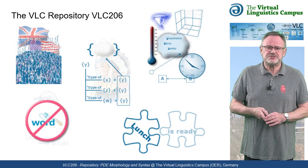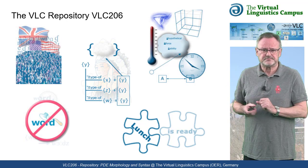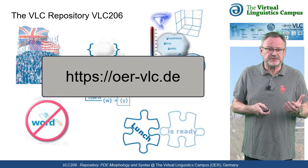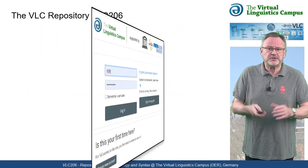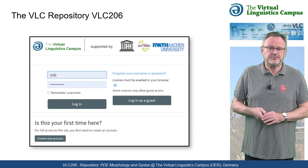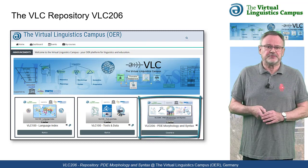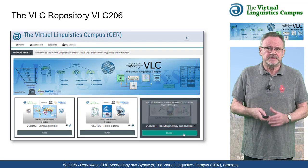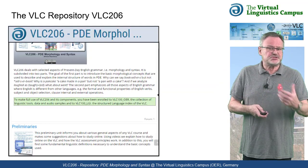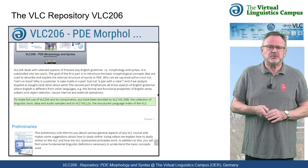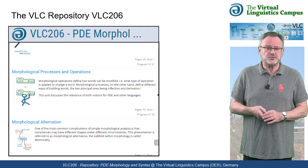Let us now look at VLC 206 in detail. Accessing VLC 206 is simple. Create your free account first, then log in with your personal data, and you will find the repository in your course overview. A click on the button of the VLC 206 tile leads you to its start site, where you have access to all topics, starting with a preliminary section with advice and help on how to use VLC 206.